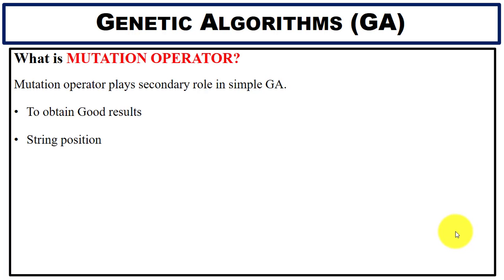The last step is the mutation operator. Using the mutation operator we can obtain good results by selecting a string position to alter. Mutation plays a secondary role in the simple genetic algorithm.